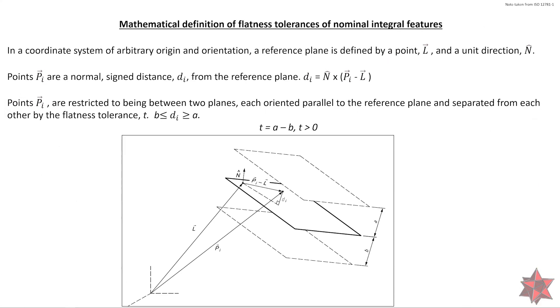So let's see the mathematical definition of flatness tolerances of nominal integral features. In a coordinate system of arbitrary origin and orientation, a reference plane is defined by a point l and a unit direction N. So this is the point l right here as we see from the origin, and this is the normal of the point. The N represents the normal of the point.